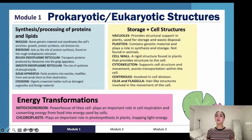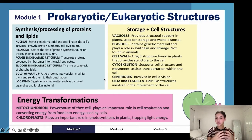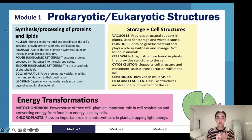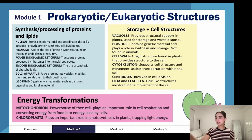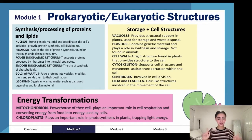Let's have a look at what the different organelles do inside the cell. We have the nucleus — in eukaryotic cells, the nucleus stores genetic material and coordinates the cell's activities. Think of it like the headmaster: it's the one directing everyone, telling different parts of the cell what to do and when to start or stop.